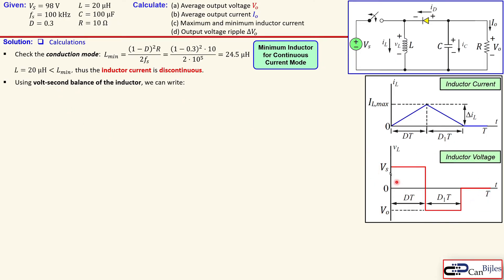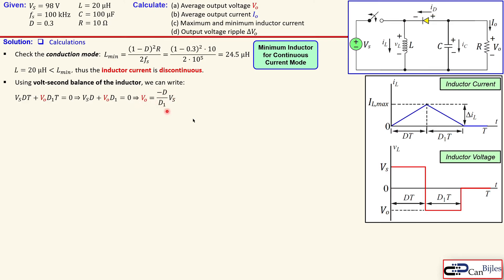From the volt-second balance, we can write: Vs times d·T plus Vo times d1·T equals zero. Dividing through by T, we can express the output voltage in terms of the duty cycles d and d1, and the input voltage Vs. We know the duty cycle and Vs, but to calculate Vo we also need to know d1.